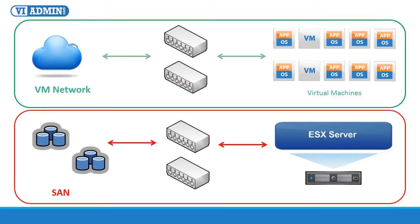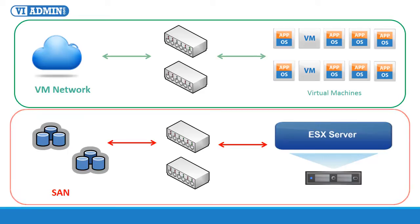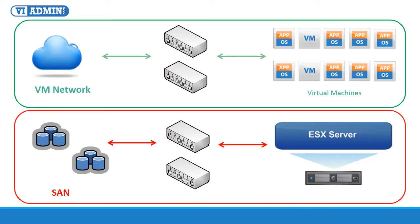We've got multiple redundant switches to serve each of the two physically isolated networks: the regular virtual machine network (green color) and the SAN network (red color). It's a best practice to run your SAN traffic on an isolated network segment for better performance and reliability. In fact, running your SAN and your regular network on the same segment is a recipe for disaster.